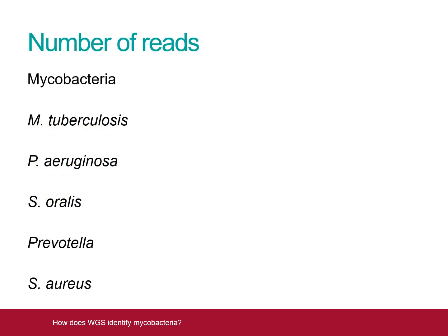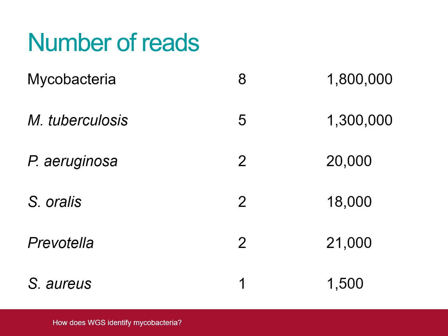Once every word has been assigned to a different species, the total number for each species or genus can be calculated. In this example, there were 8 words only found in mycobacteria, with 5 of them being specific to mycobacterium tuberculosis. There were a smaller number of words from other, contaminating bacterial species. In a real clinical sample, these words usually number in the millions.